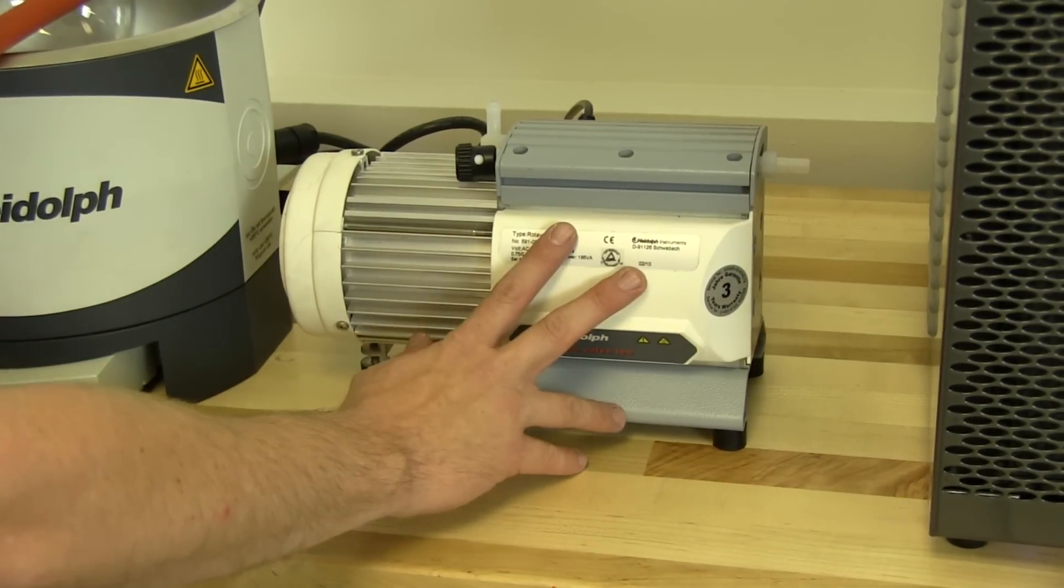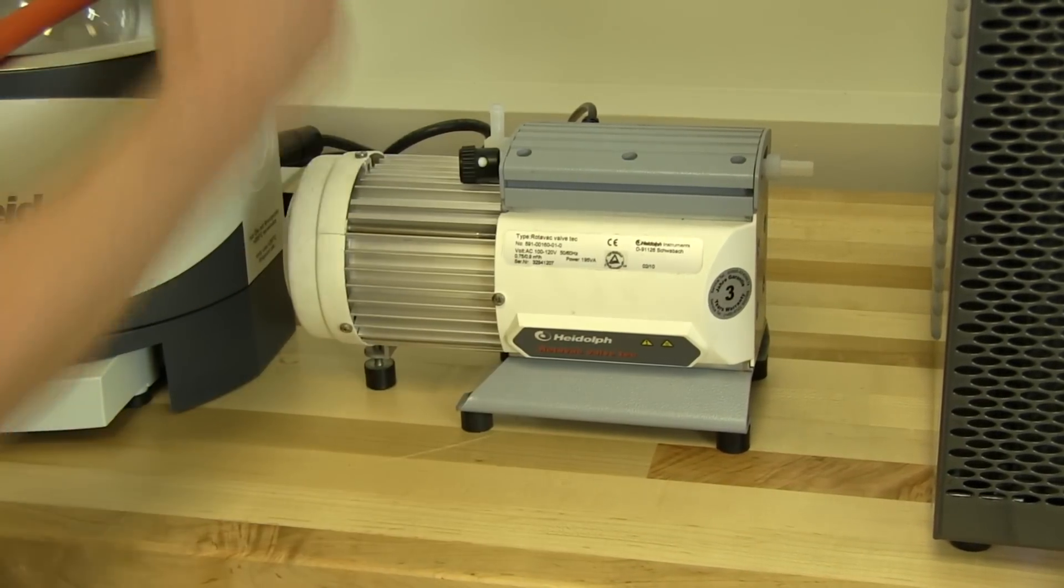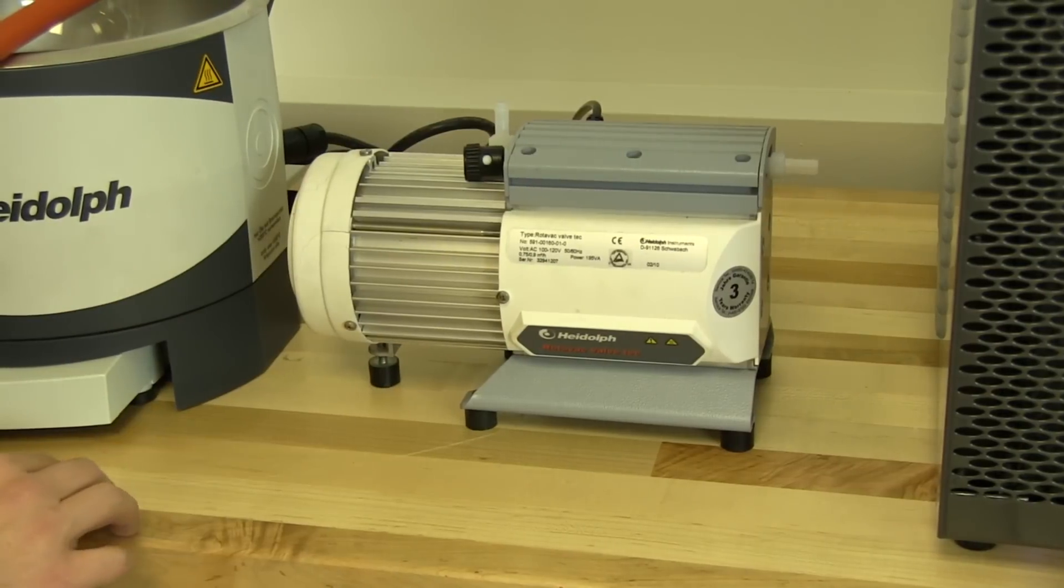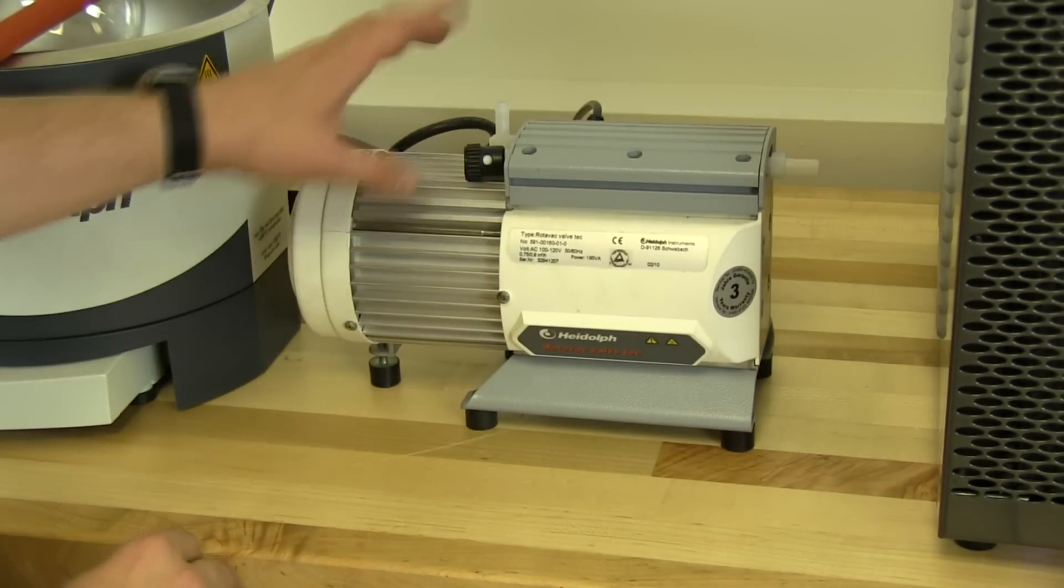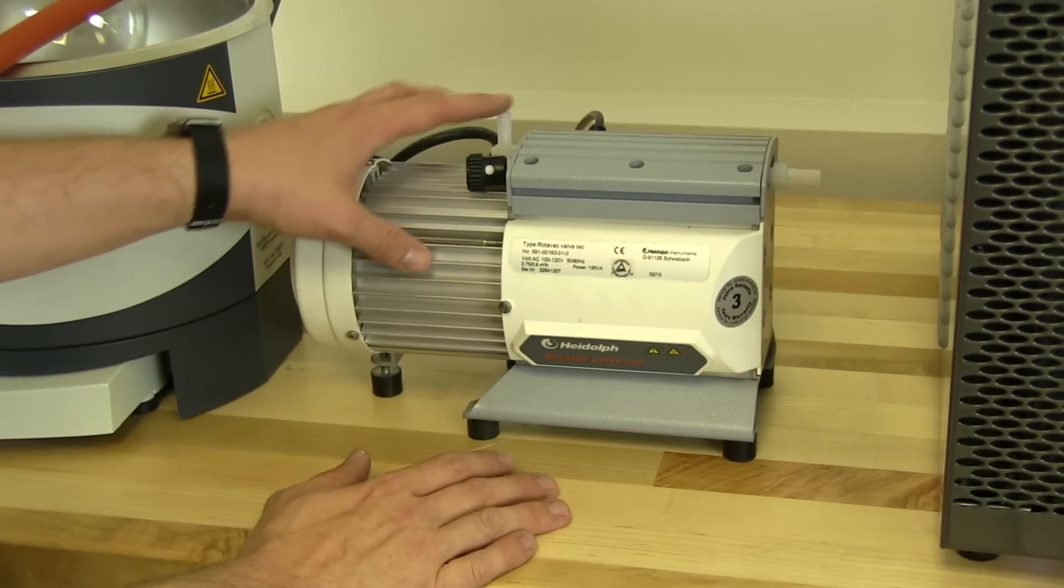This can go anywhere. This can go underneath the table, behind, or on top of our chiller over here. But what you want to make sure is that you have the inlet and outlet closely identified.